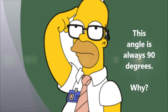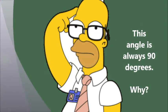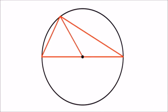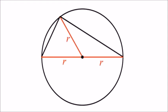This angle is always 90 degrees. Why? We divide the triangle in two by drawing a radius from the center to the vertex on the circumference. We can recognize that each small triangle has two sides that are radii. All radii are the same in a particular circle, which means each small triangle has two sides the same length.